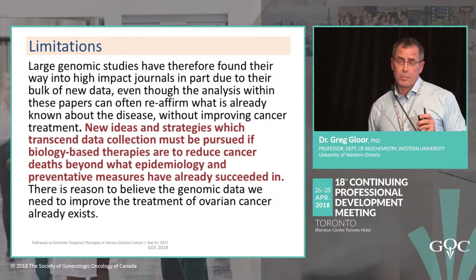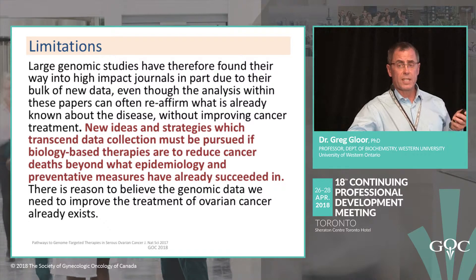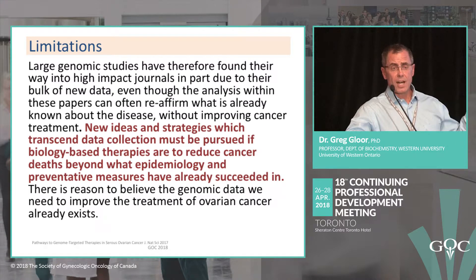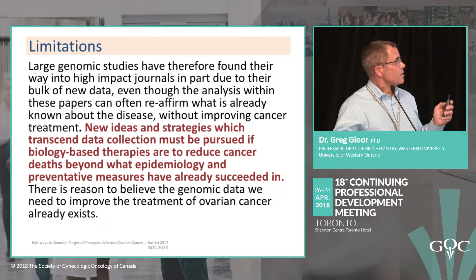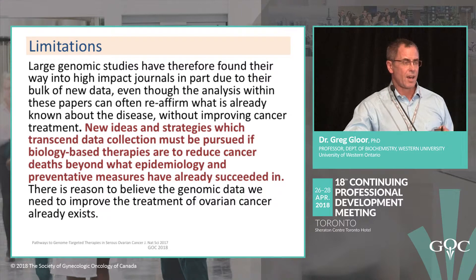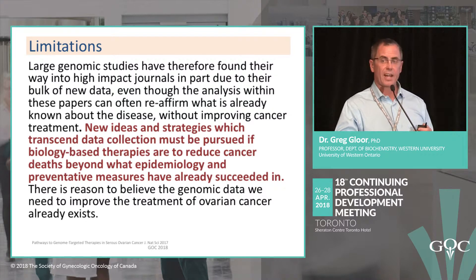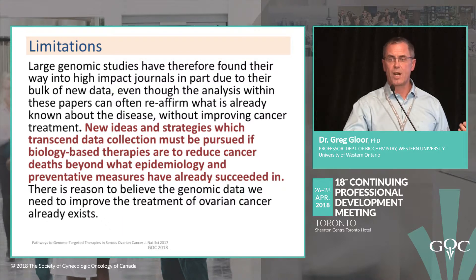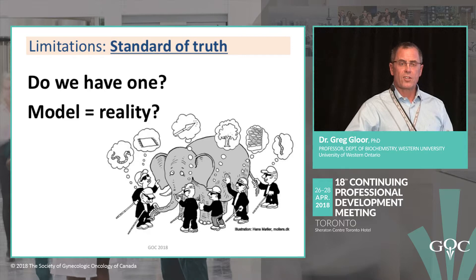Now, some limitations. We have so much data we don't really need more, but high-profile journals love new datasets much more than new tools. There's reason to believe the data we already have is more than enough to improve treatment of ovarian cancer, if we can figure out how to analyze it properly. The other limitation is the standard of truth: we don't know what causes cancer or how to treat it very well — my mother and my aunt died of ovarian cancer, so I know this for a fact.